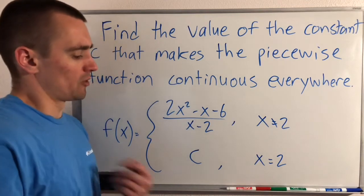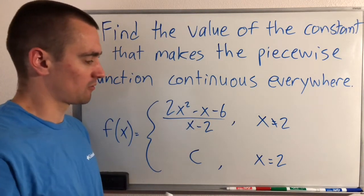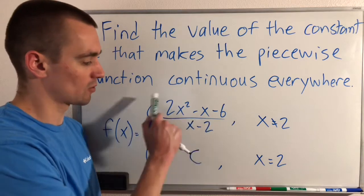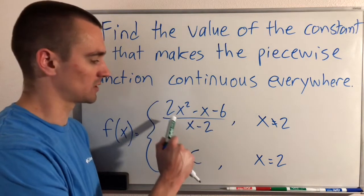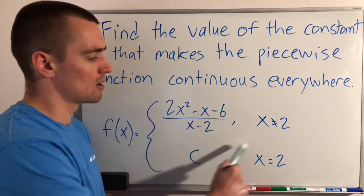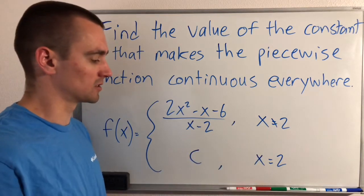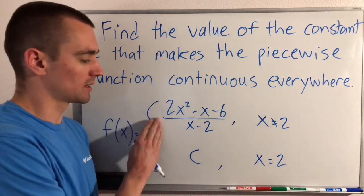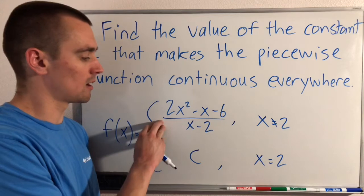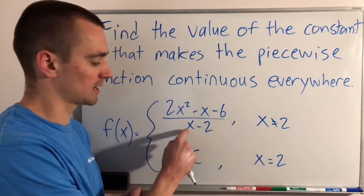So the reason why we just have this function, or this piece of our piecewise function defined here for all x that's not equal to 2, looking at this rational function, you can see that if we plug in x equals 2 here, we would get 2 minus 2,